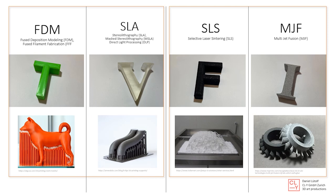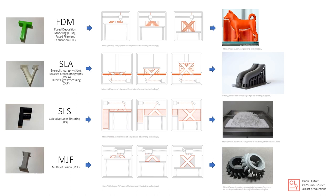The FDM and SLA prints both need support during printing, while SLS and MJF don't need support — sometimes when prints are really small or fragile you build support, but it's not really needed because of the powder. To give a quick summary: FDM is where hot plastic comes out of an extruder head. SLA is a resin bath where parts get cured by a laser or light source. SLS is a powder bed where a laser fuses powder together. And MJF is also a powder bed where a light source and an activator cure the powder together.